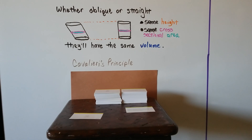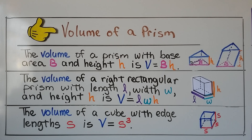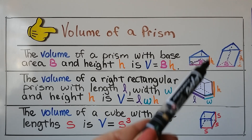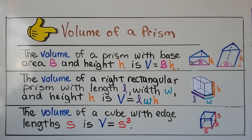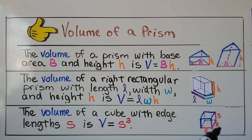We're going to use that in this lesson and in the next one about cylinders. The volume of a prism with base area B and height H is V = BH. The volume of a right rectangular prism with length L, width W, and height H is V = LWH. And the volume of a cube with edge length S is V = S³, since all sides are equal.